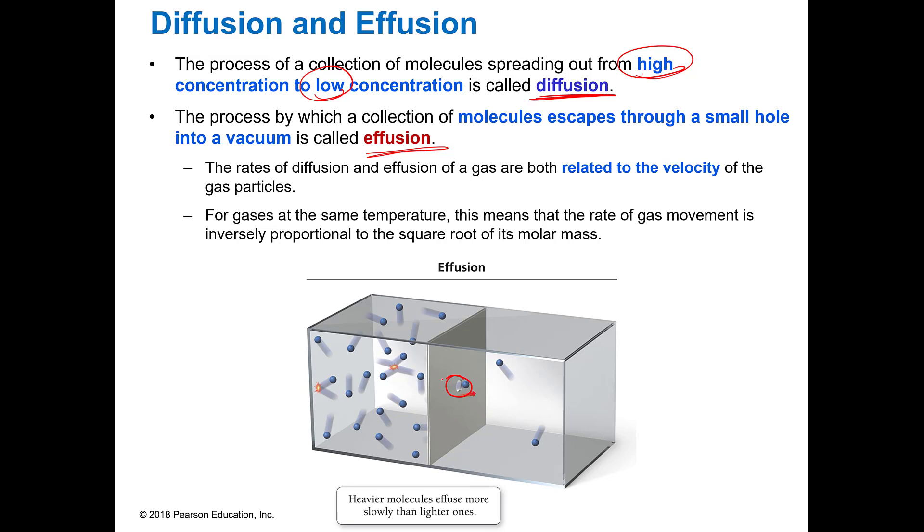And so the rate of diffusion and effusion are related to the velocity, which is related to the size or the mass of the gas particle. So if you're at the same temperature, the rate of your gas movement is going to be inversely proportional to the square root of its molar mass. Bottom line is heavier molecules effuse slower than light ones because they have slower velocity and they're bigger.